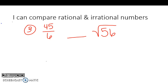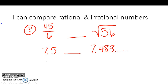On this one I have to evaluate both of them. Remember, in order to get a fraction into a decimal I have to divide. So 45 divided by 6 gives me 7.5. I also have to evaluate the square root of 56, and I get 7.483 and then that keeps going. They both have 7s in the ones place, so I have to move to the next digit. Is 5 bigger than 4? Yes. So 45 over 6 is greater than the square root of 56.